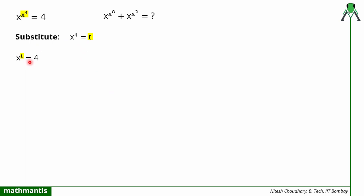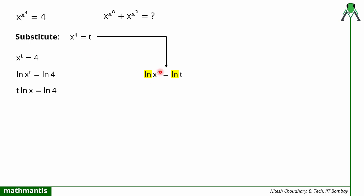To solve these two exponential equations, I will take the log of both sides. In the first equation, taking log gives ln of x raised to power t equals ln 4. Applying the property of logarithm, I bring the exponent to the front: t ln x equals ln 4. Similarly, taking log of the second equation gives ln of x raised to power 4 equals ln t, and bringing 4 to the front: 4 ln x equals ln t.